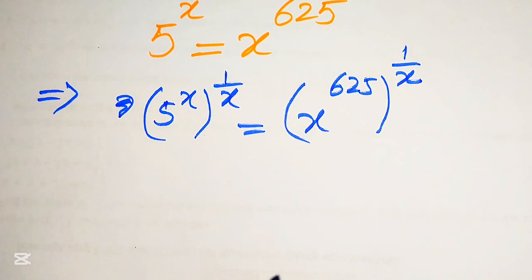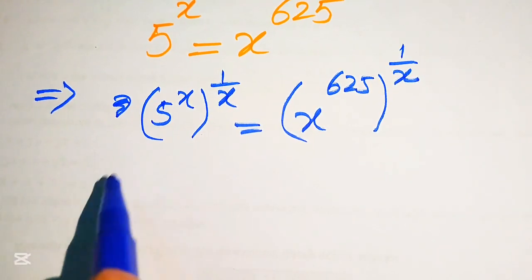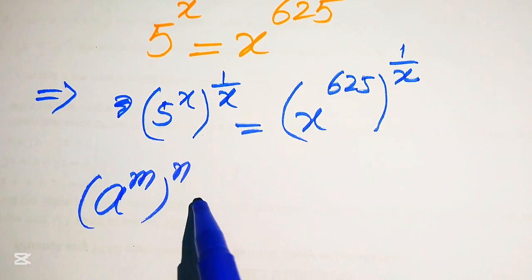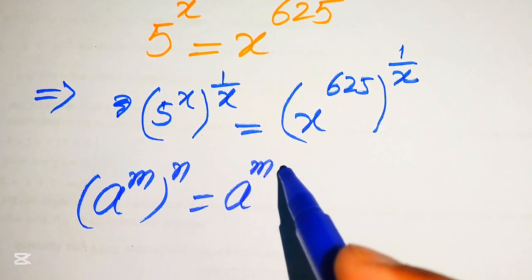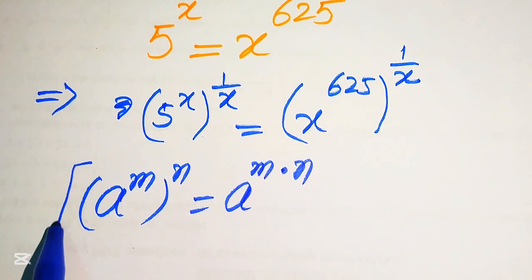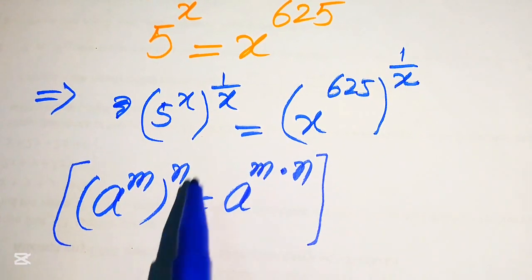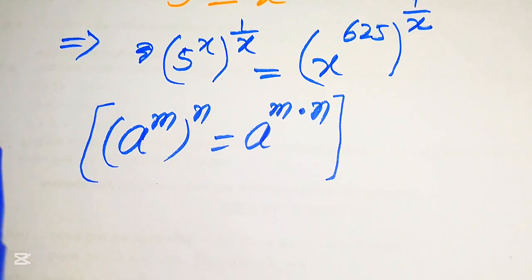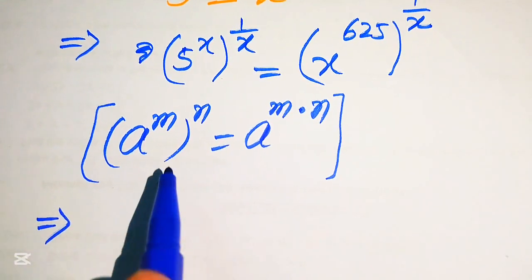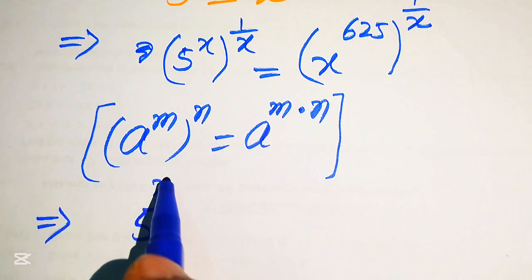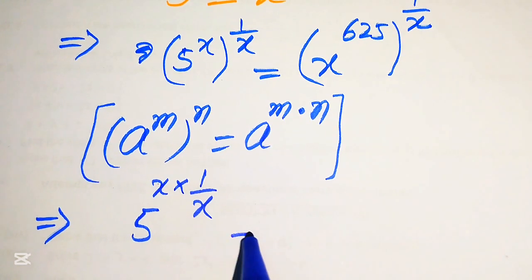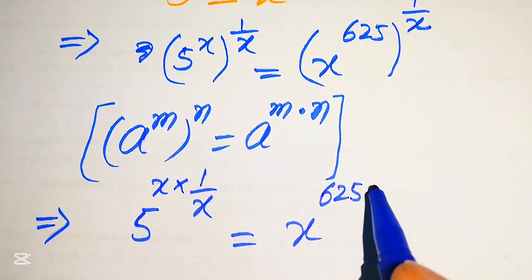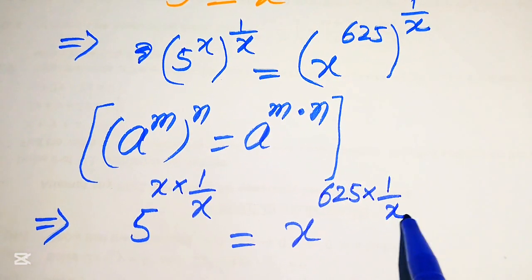Now we apply the exponent law: a to the power of m, whole power n, equals a to the power of m multiplied by n. According to this law, we multiply the two exponents on each side, giving us 5 to the power of x times 1/x, equals x to the power of 625 times 1/x.